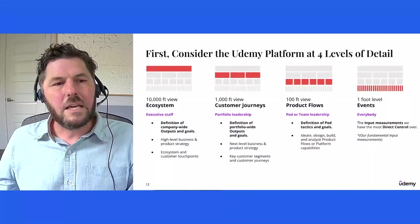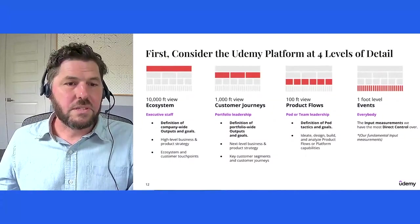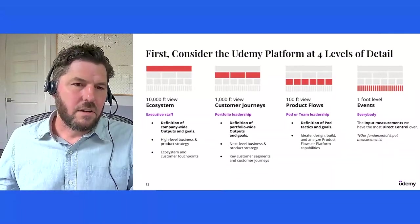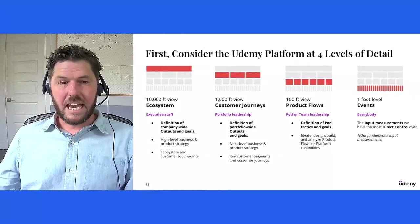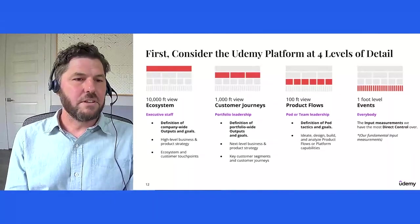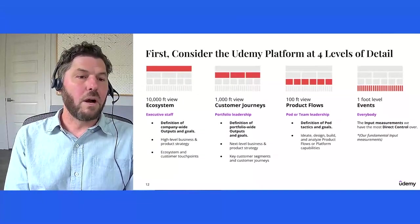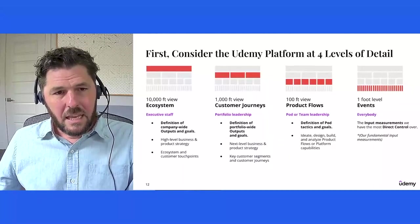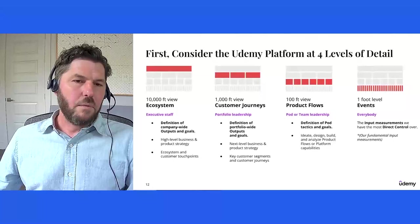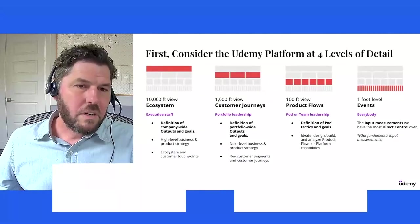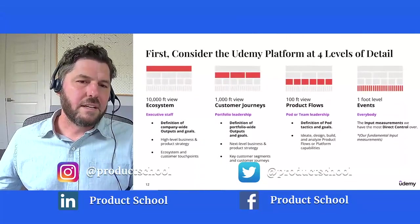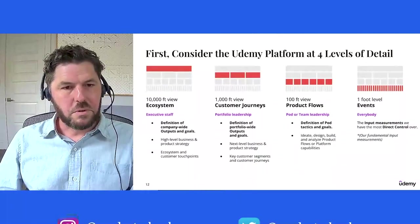And at this level, you can think about establishing portfolio-wide or customer segment-based outputs and goals. This is the next level of business and product strategy. And we approach this by defining customer journeys and customer journey phases. And visually, you can see that the entire ecosystem decomposes into a set of meaningful customer journeys. Zoom in again, and we can decompose that down into product flows. And this is at the level of our actual pods, our teams, and their tactics and goals. And so this is teams ideating, designing, building, and analyzing the product flows and platform capabilities they're putting in place to drive those higher-level portfolio or company-wide or ecosystem-wide outputs. And product flows are understood at the ground level with events. And we use amplitude to do this. And everyone here is a stakeholder. These events are the input measurements that we have the most direct control over. This is fundamental to our entire system.